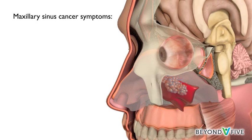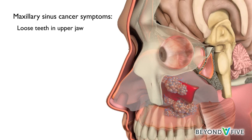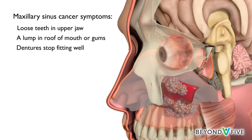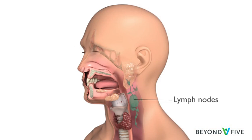Tumours here can also cause loose teeth in the upper jaw, a lump in the roof of the mouth or gum, or dentures to stop fitting well. If nasal or sinus cancers spread to lymph glands, there may be a lump in the neck. Lymph nodes are bean-shaped glands in the neck that are part of the immune system's defence against infection.